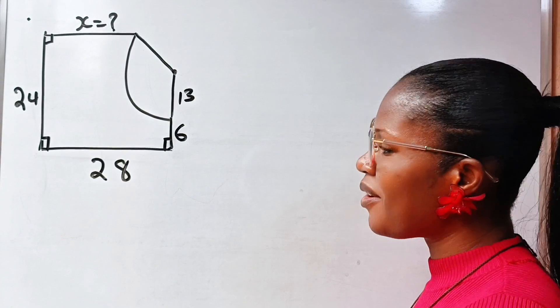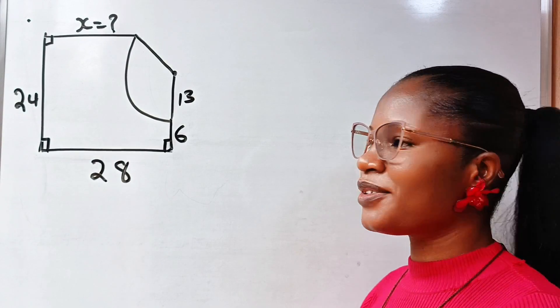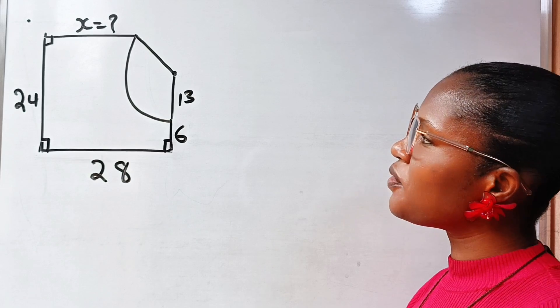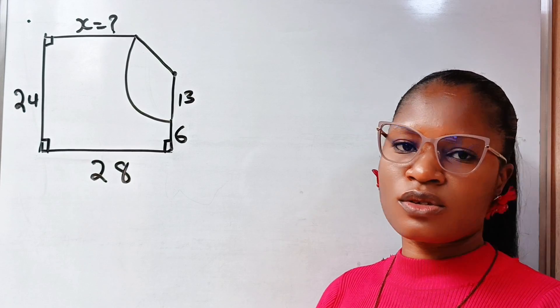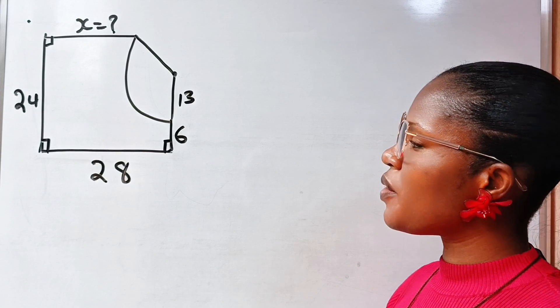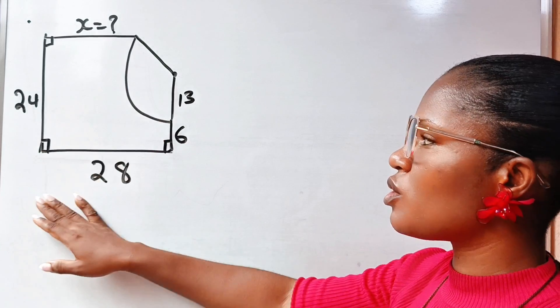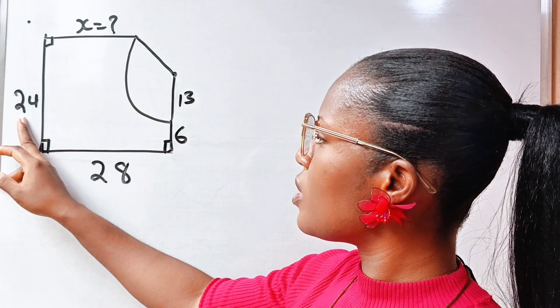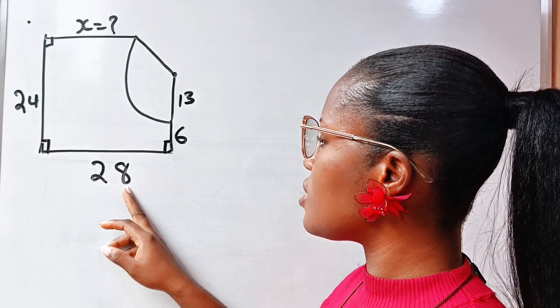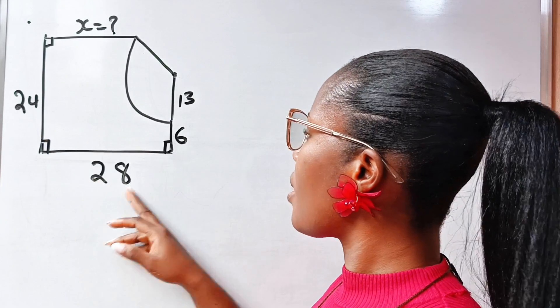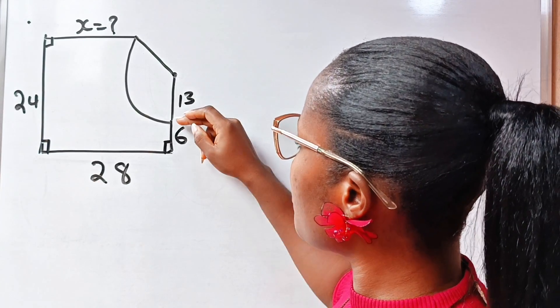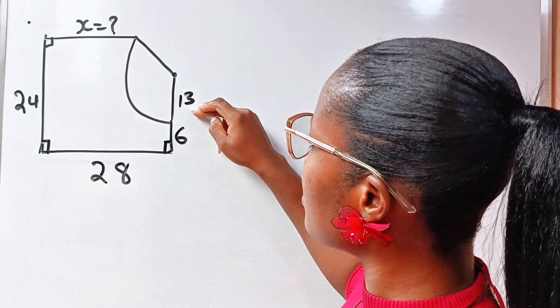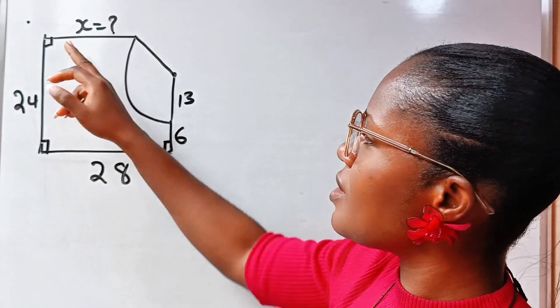Hi friends, welcome back to my channel. We have a beautiful mathematics geometric question to solve. The question says we should find x. Please note, this is not drawn to scale. So this is 24 units, this side is 28 units, this is 6, from here to here is 13, and we have to find the length x.